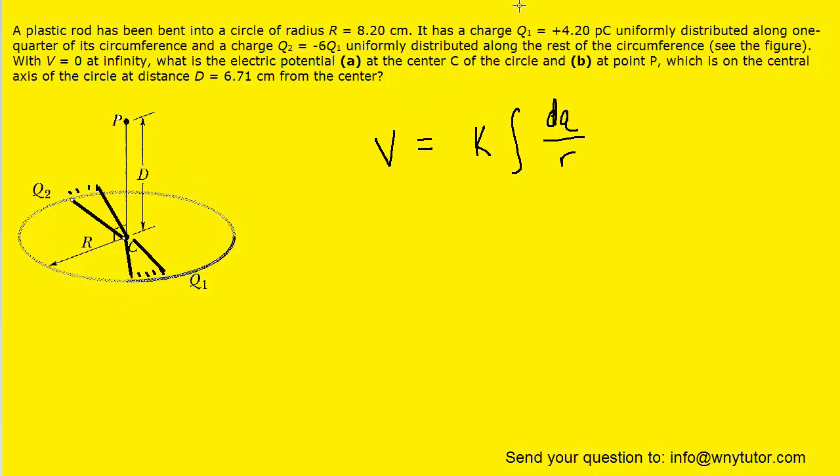And because the distance is a constant, that means we can factor it out of the integral. And then we're left with the relatively simple integral of dq, which is basically the total charge present along that continuous charge distribution. In other words, when we integrate, we just end up with kq divided by r.